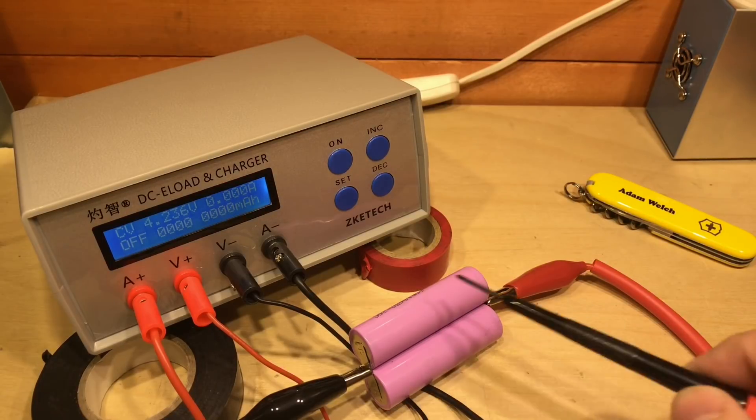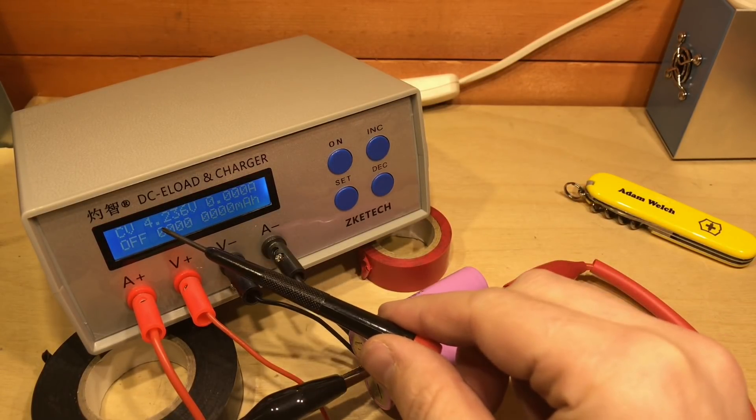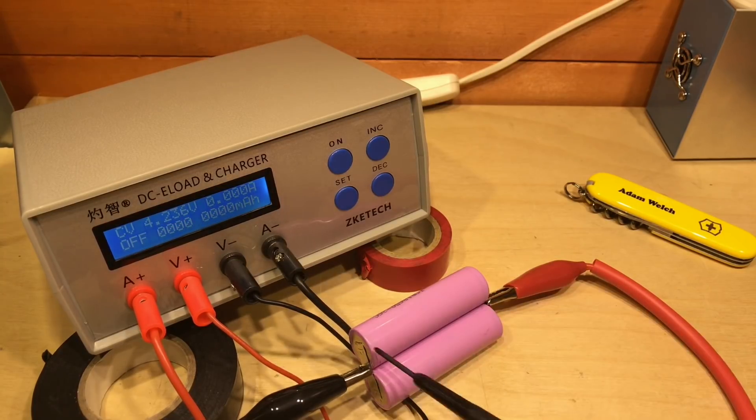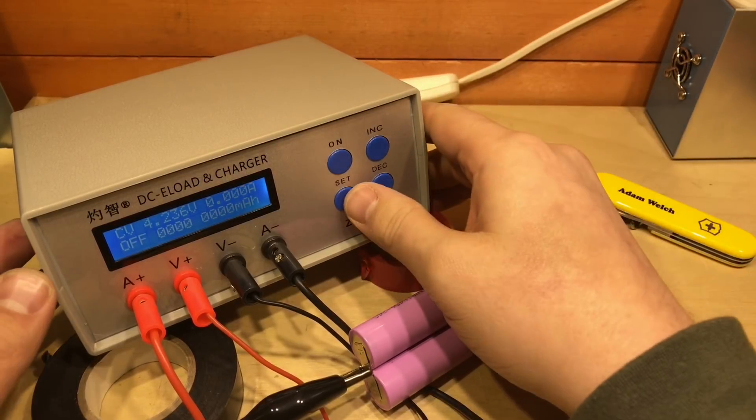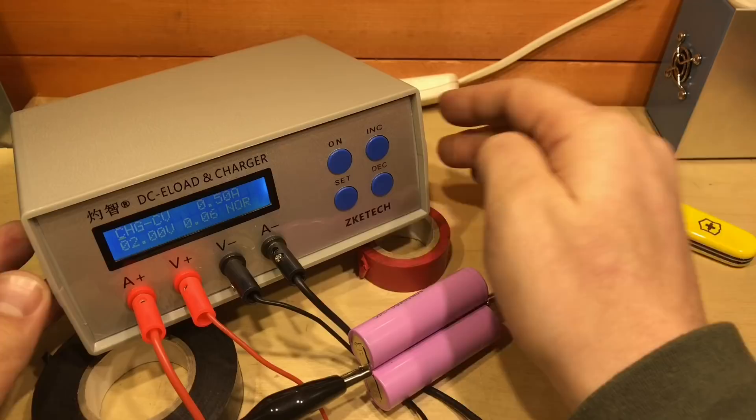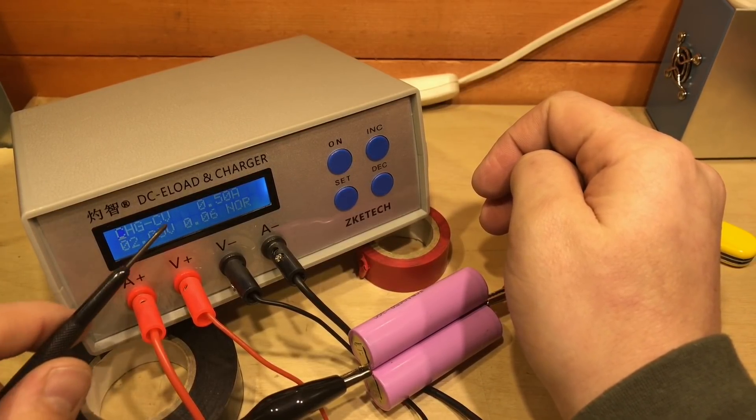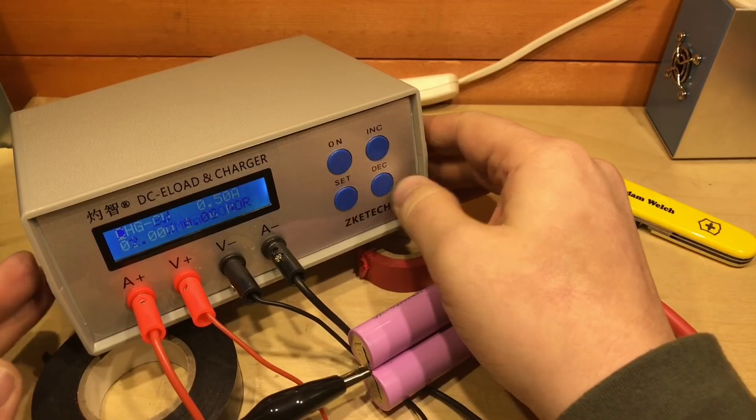Now I've connected up the 18650s we saw earlier, and we can see the reading here is reading 4.236 volts across those cells, so they're fully charged. So let's see if we can change the mode. If we press and hold set, it then shows us the mode. It's showing charge, constant voltage.